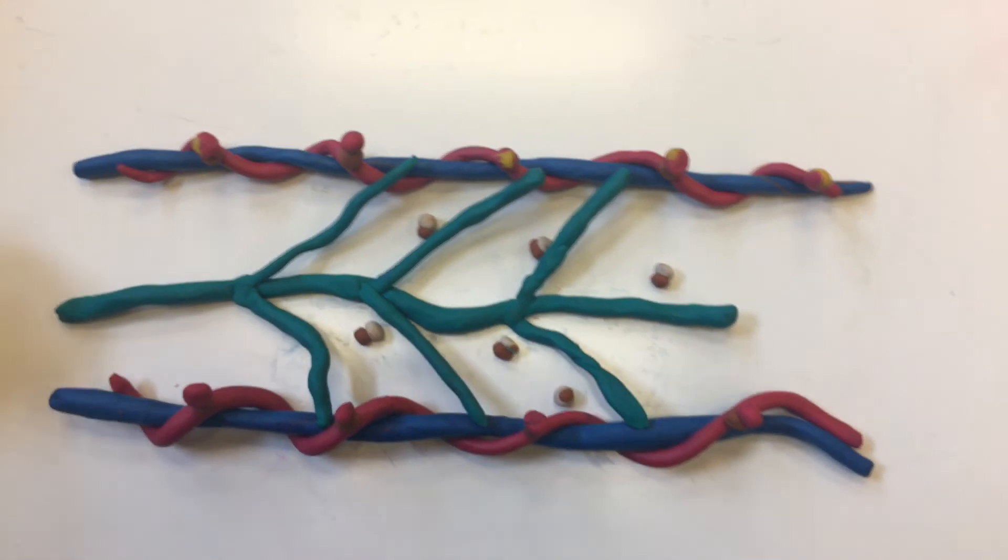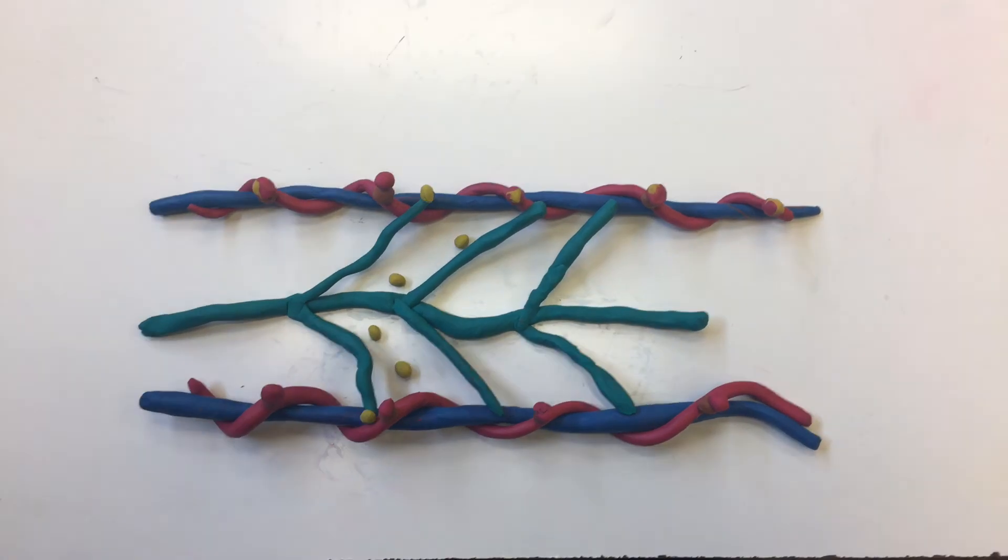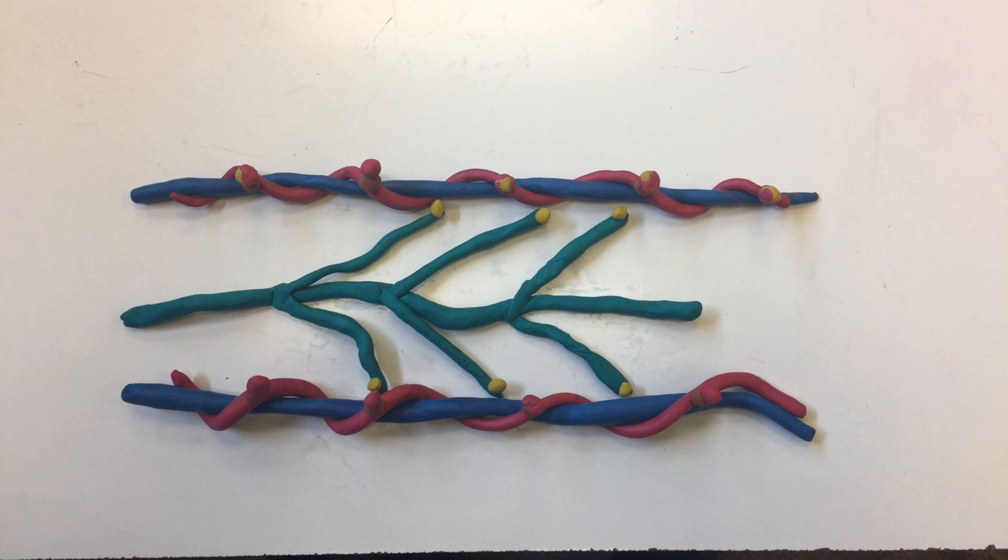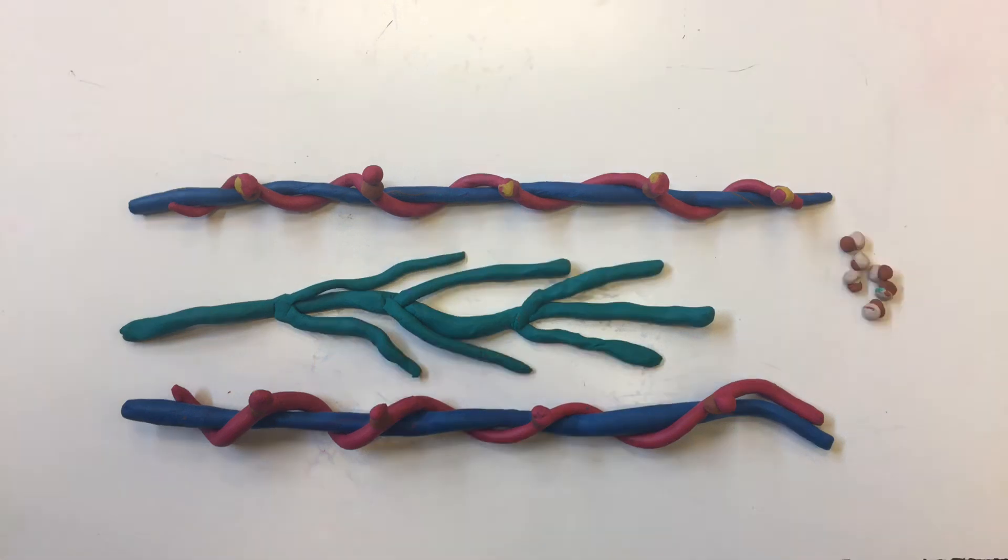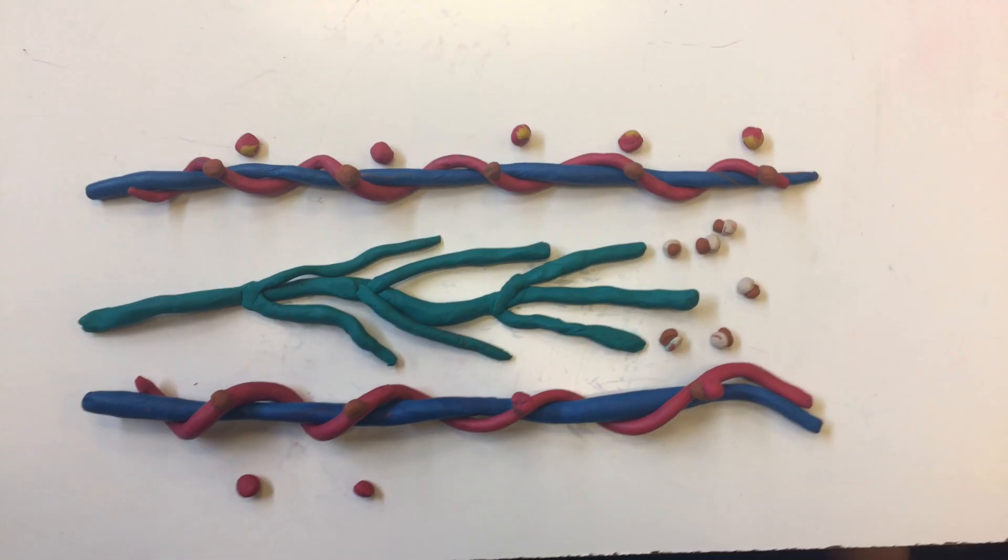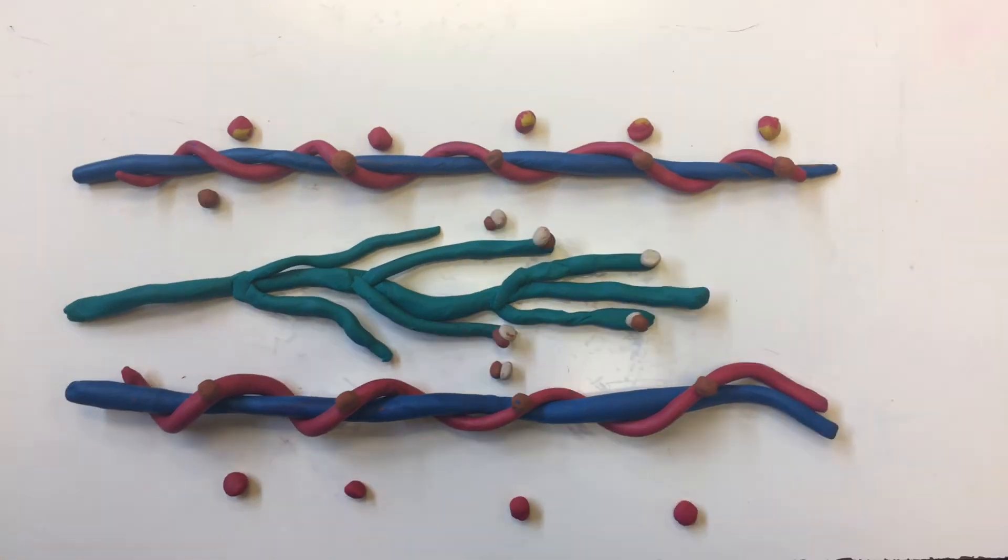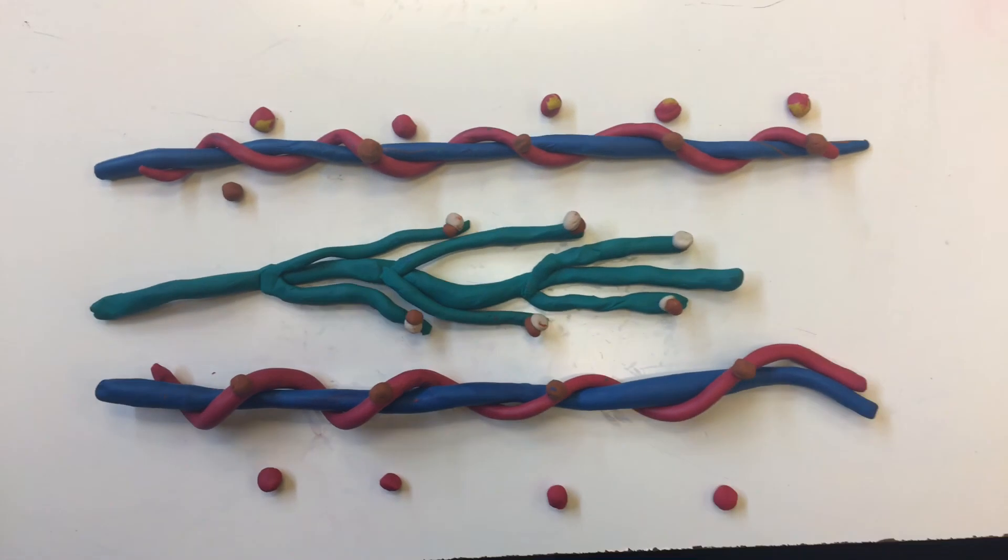ADP plus P makes a thin filament attached to the thick filament. Now we are going to see ATP bring the thick filament down from the thin filament. And that is what ATP has to do with muscle contraction. Once ATP is used we are going to see ADP come back to the thick filament and attach to the actin once again.